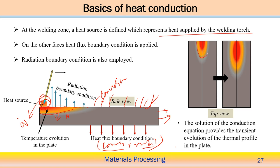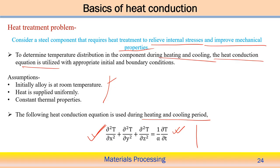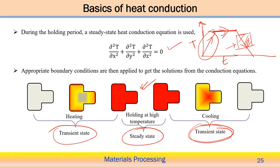The heat generation is the volumetric heat source — the q-dot term — and solving this gives the temperature distribution. This color variation represents the temperature distribution of the domain, showing the temperature at any particular point and at any particular time. The solution of the heat conduction equation provides the transient evaluation of the thermal profile in the solution domain. Comparing the welding problem to the heat treatment problem: in heat treatment, there is no heat generation term; heat is supplied through the surface flux boundary condition, and we solve the governing equation without heat generation to get the temperature distribution.